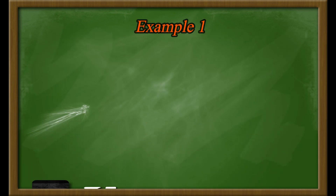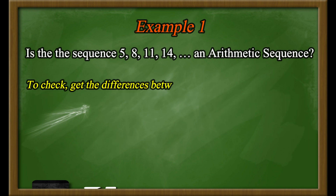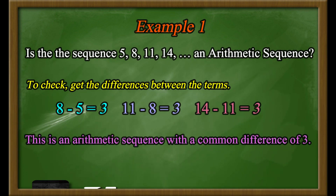Example number 1: Is the finite sequence 5, 8, 11, 14 an arithmetic sequence? To check, get the differences between the terms. Getting the differences, you will see that there is a common difference of 3. Since the differences are all equal to 3, this is an arithmetic sequence. The sequence is therefore an arithmetic sequence with a common difference of 3.